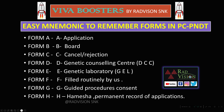The easiest mnemonic for PCPNDT forms: A for application; B for board (displaying the certificate); C for cancel or rejection; D for genetic counseling center (DCC); E for genetic laboratory (GEL); F for the form filled routinely by us; G for guided procedures consent; H for 'hamesha' - permanent record of applications. This mnemonic is useful for both theory and practicals.